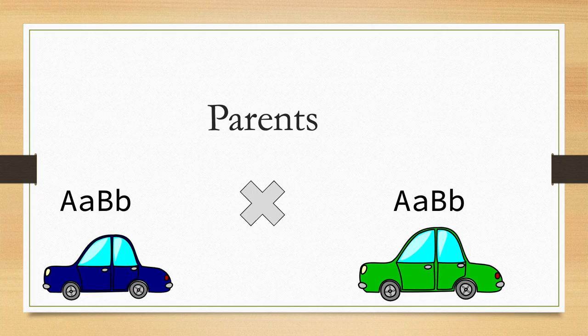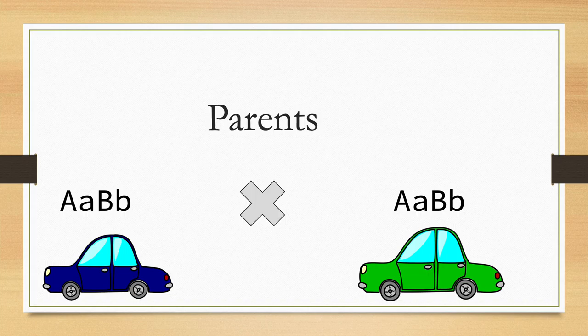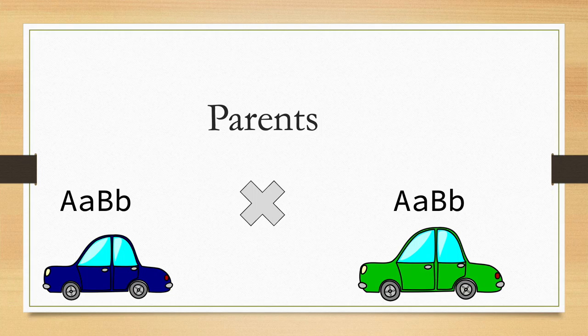The offspring that I want to conclude with is a two-door car with leather interior seats. We have two car parents. Parent one is a blue four-door sedan with leather seats.